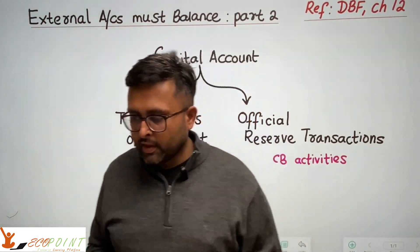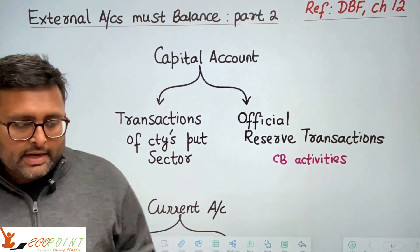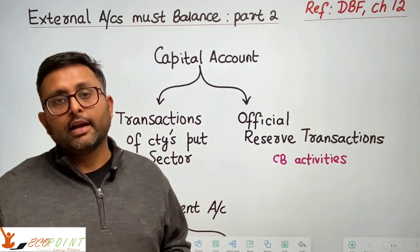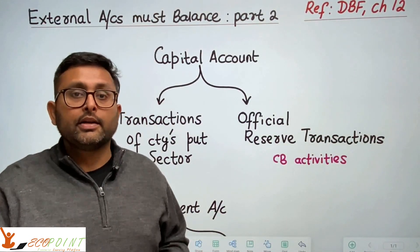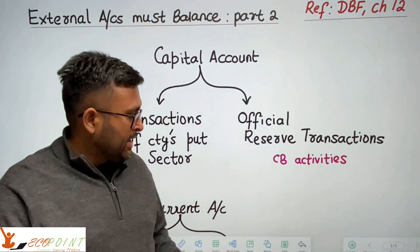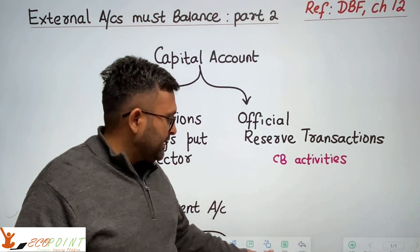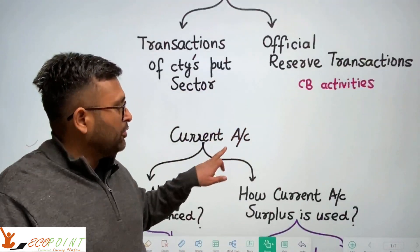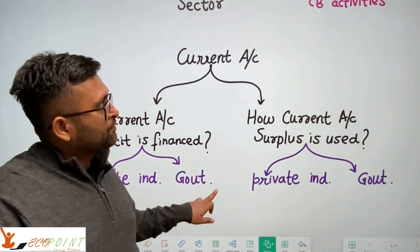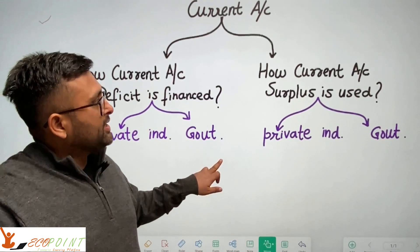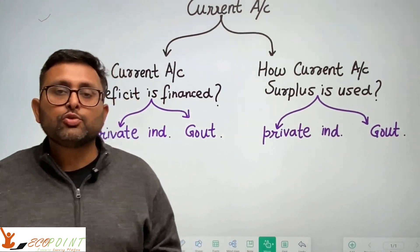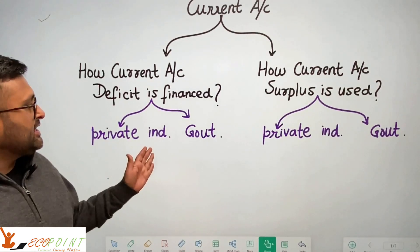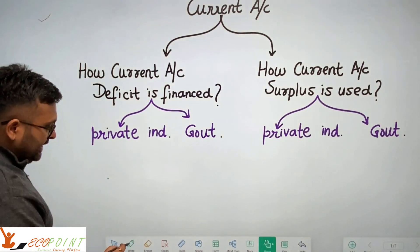The main idea is how the current account is financed. If there is a deficit in the current account, how is that going to be financed? And if there is a surplus, how is that surplus going to be used? The two participants here are basically private individuals and the government. A current account deficit could be financed by private individuals by selling assets.